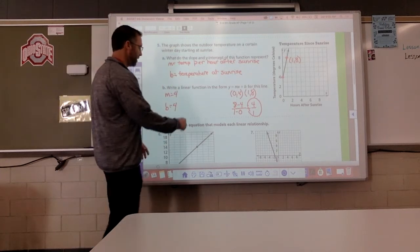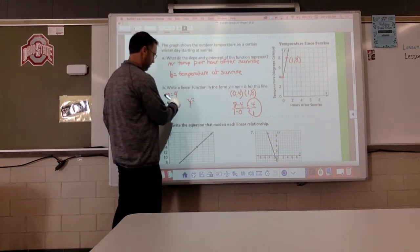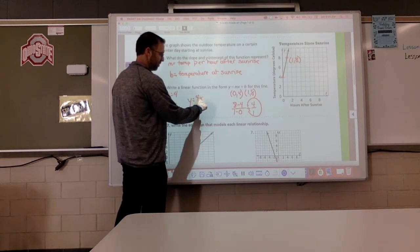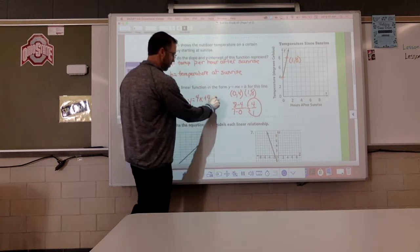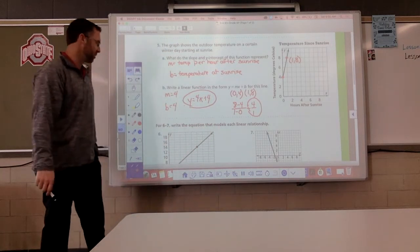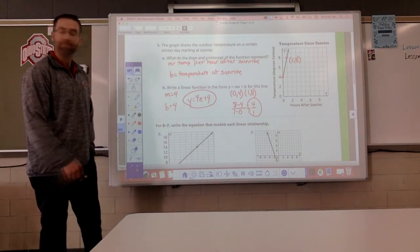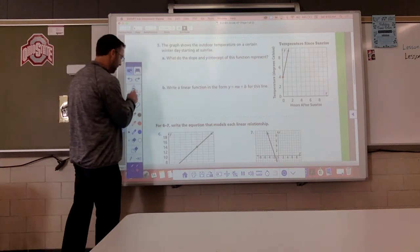So, write the equation. Slope 4, that's supposed to be an x. Plus your y-intercept of 4. So, 4x plus 4. There you go. Trying to make this quick. Let's go.